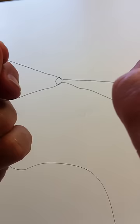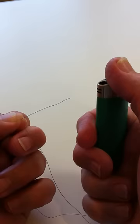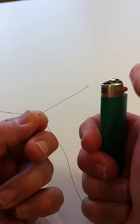Now we get a lighter, and we put the thread at the base of the flame, not at the top, just at the base, and create just a tiny little blob.